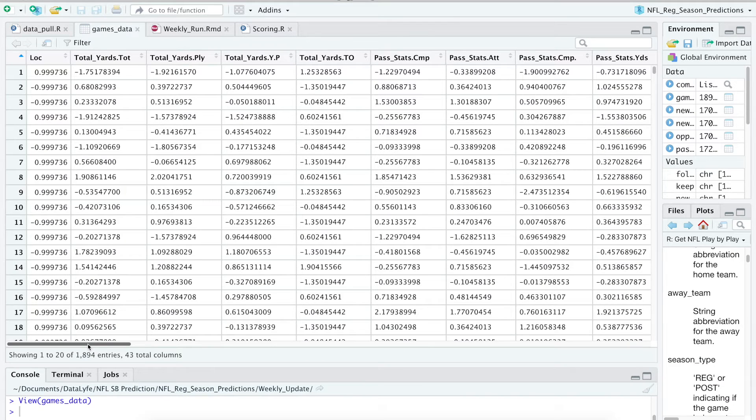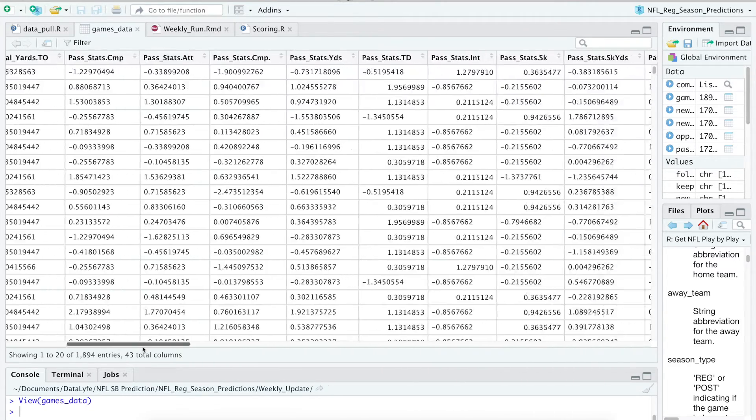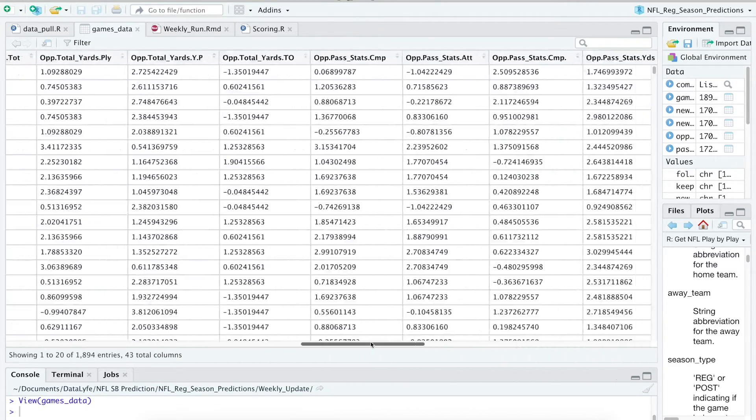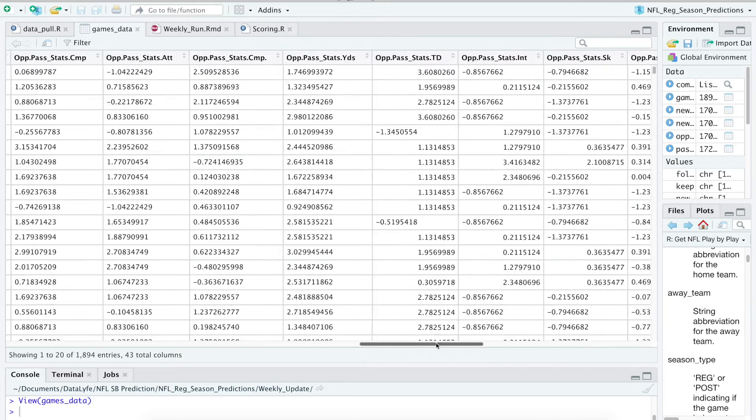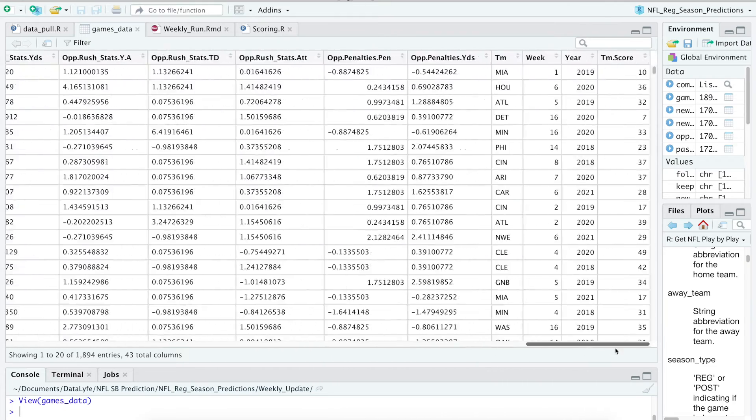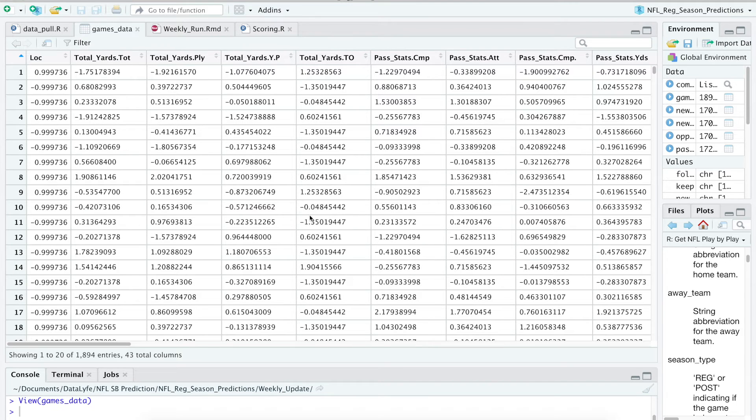Now our data set has everything: the location of the game, the total yards, the opponent statistics, and the identification columns like the team, the week, the year, and how many points they scored which is our dependent variable. Keep in mind I've already standardized this data because we're going to be using a neural network.